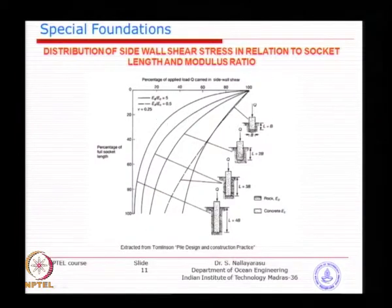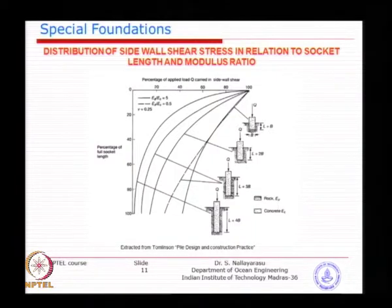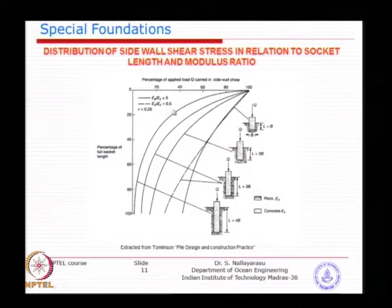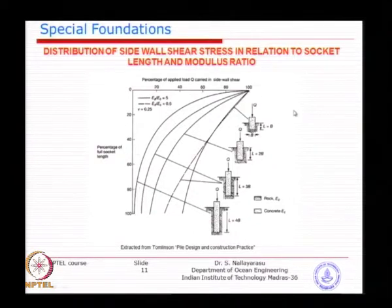This chart gives you an idea of the relative modulus of the rock with the concrete pile. Two ratios have been given — one for a modular ratio of 5 and another for a lower bound of 0.5 — with varying socket length and varying side wall friction.